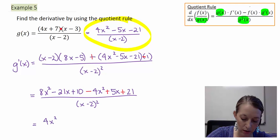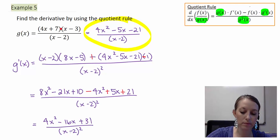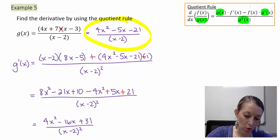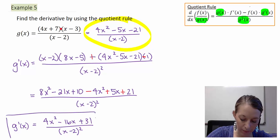Combining my terms, that gives me 4x squared minus 16x plus 31, all over my denominator squared. And if we want, we can see if the numerator factors, which I don't believe it does. So we have our final answer of g prime of x is equal to this guy here.